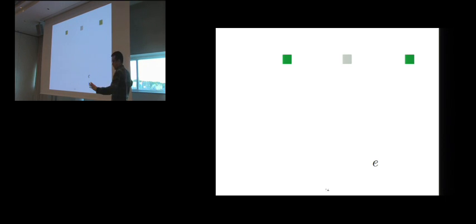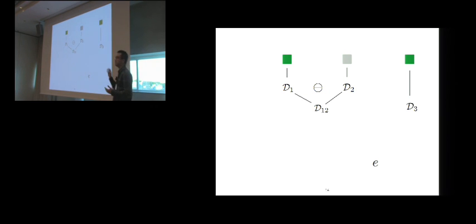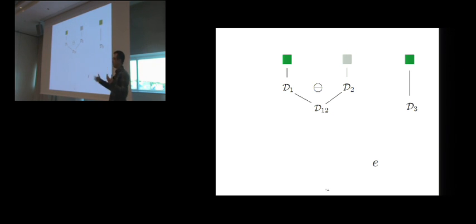Internally, the algorithm constructs one data structure per example, representing all token sequences that match that example. It then performs manipulations of these data structures. Specifically, it applies a subtraction operator on the first two data structures D1 and D2, producing a new structure D1\D2 representing all token sequences in D1 but not D2 — computing the difference because the second example is negative. Then it applies an intersection on D1\D2 and D3 because the third example is positive.